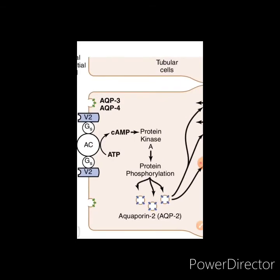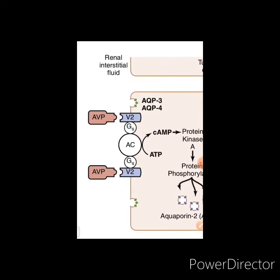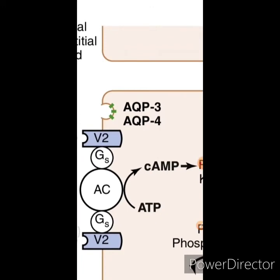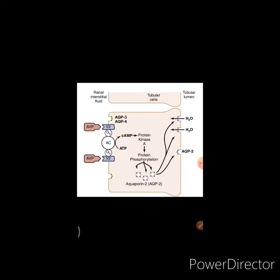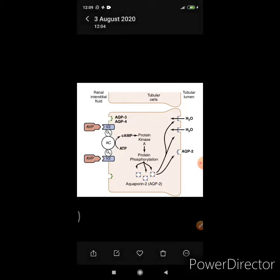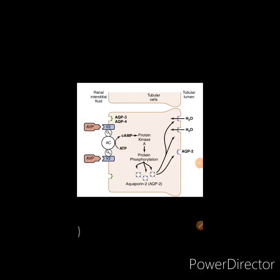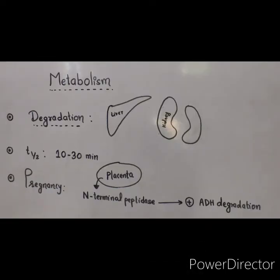When water enters the cell, it can easily exit into the renal interstitial fluid via aquaporin-3 and aquaporin-4. Only aquaporin-2 is under the control of antidiuretic hormone; aquaporin-3 and aquaporin-4 are not under ADH control.